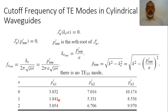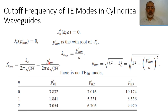This means that the lowest cutoff frequency, or the mode which has the lowest cutoff frequency, is TE11. The cutoff frequency in this case is determined as 1.841 over 2π a times square root of mu epsilon. So the dominant mode in cylindrical waveguide is TE11.